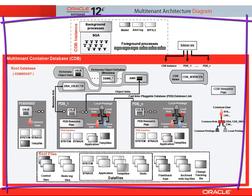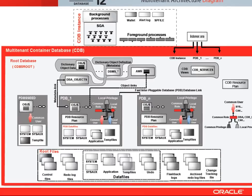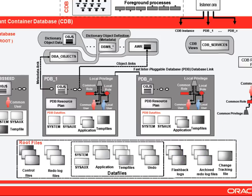The multi-tenant container database itself and its instance represent a special container associated with container ID 0. Inside a CDB, you find another type of container called the root. Its name is CDB$ROOT and is associated with container ID 1. At the physical level, that container contains a set of files like in the non-CDB case — that is, control files, redo log files, data files associated with the SYSTEM and SYSAUX tablespaces, undo files, temporary files, and user data files. In addition, the root container can have flashback logs, archive log files, and a change tracking file if the associated functionality is used.